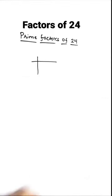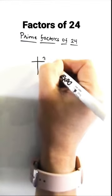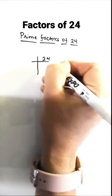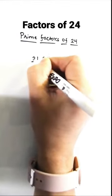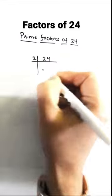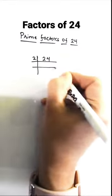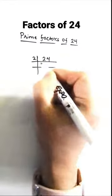Let's find prime factors of 24 using the prime factorization method. We will divide 24 by prime numbers.